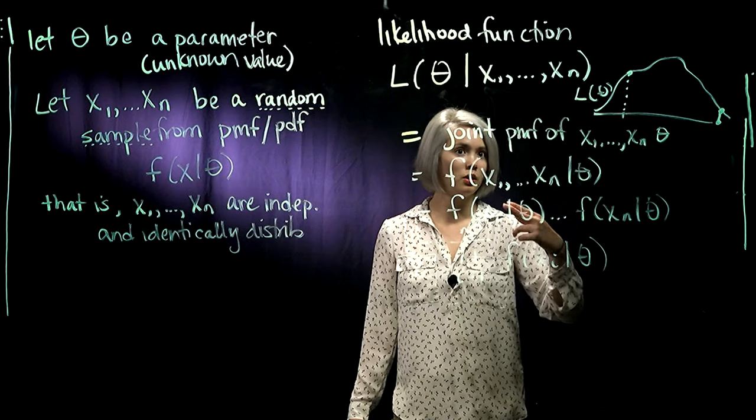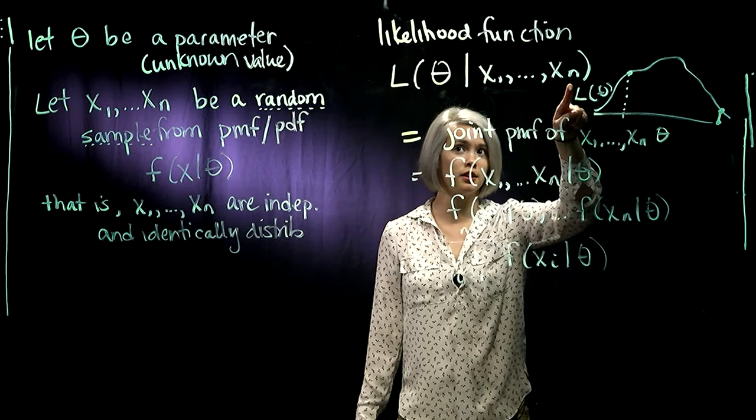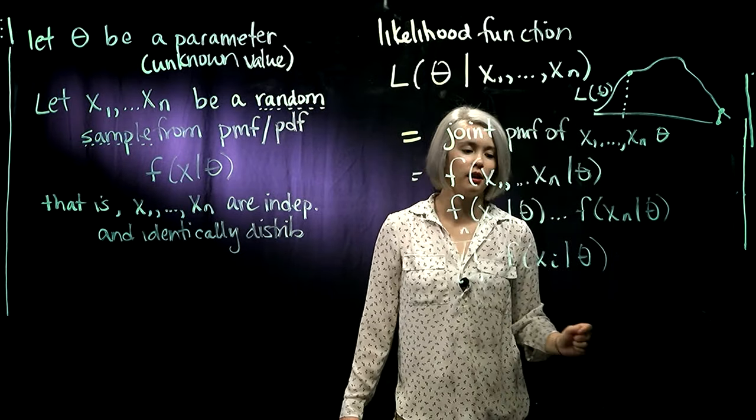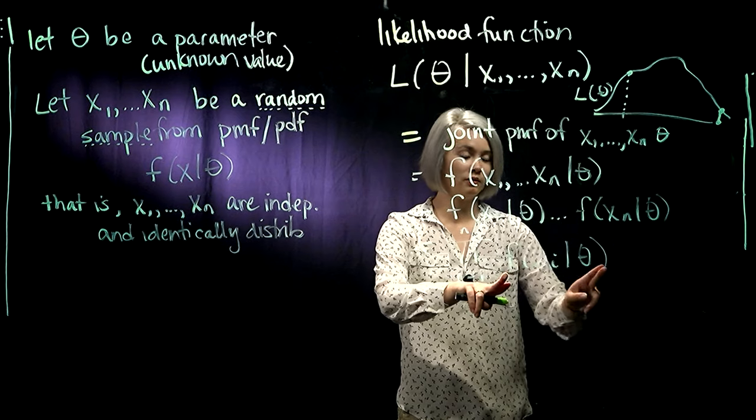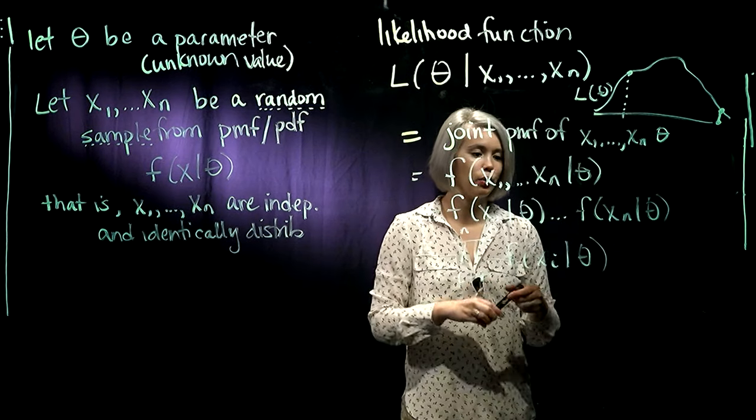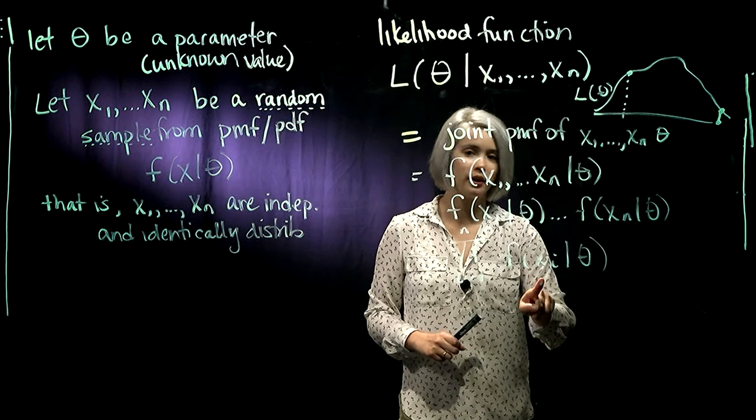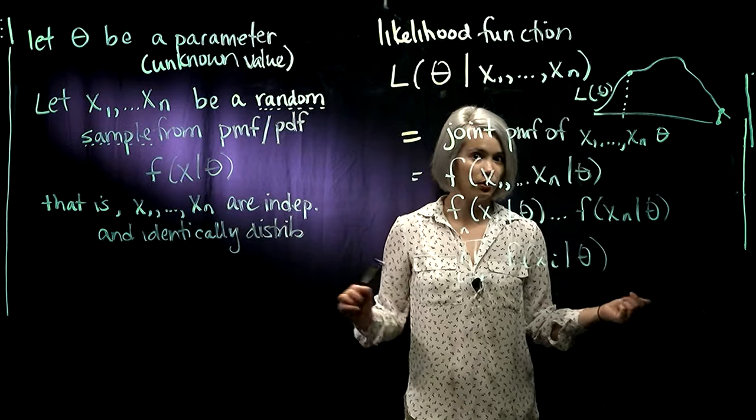So again, we in MathStat world are thinking of the data as fixed, and we're looking at different values of theta. But to get our joint PMF or PDF, we write down the product of univariate PDFs. And of course, these PDFs are given theta, plug in different values of x. So it's a function of x with the value of theta held constant.